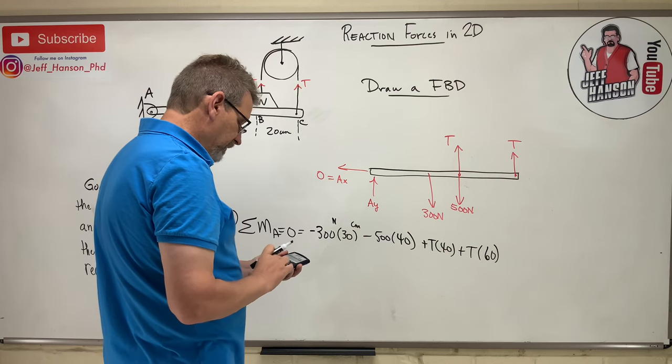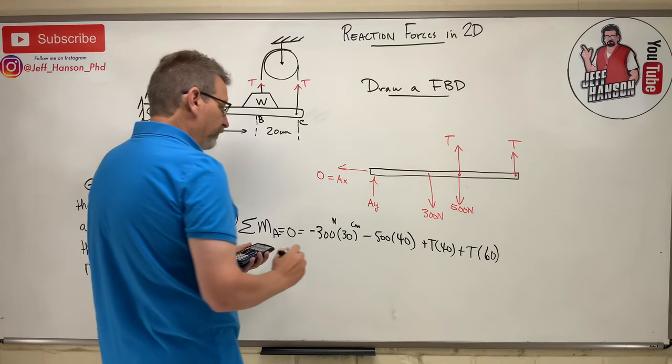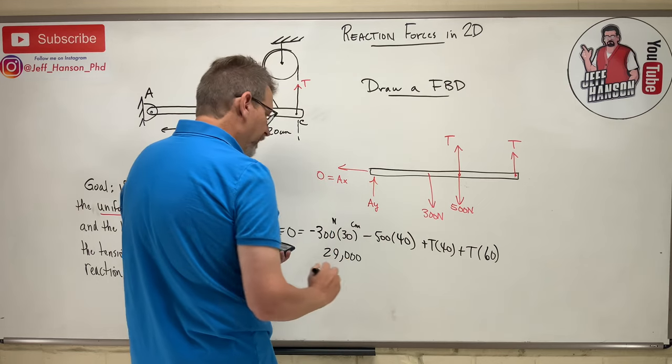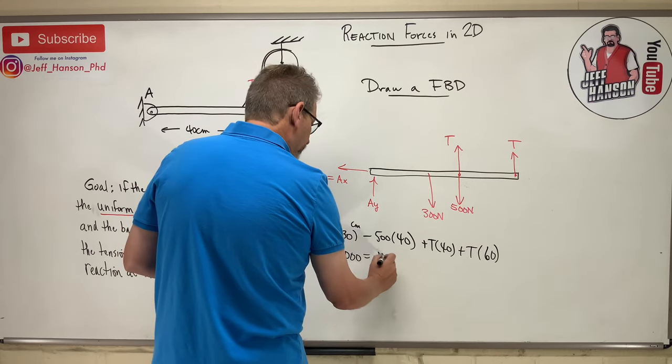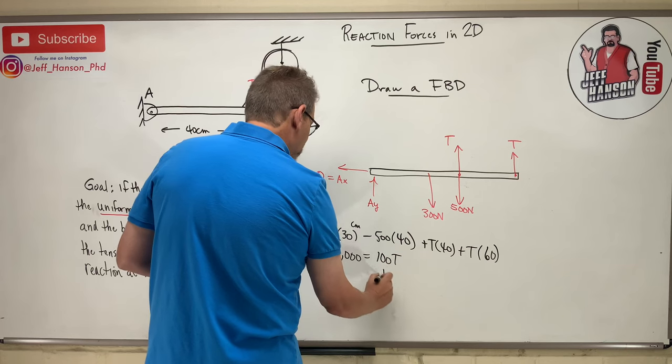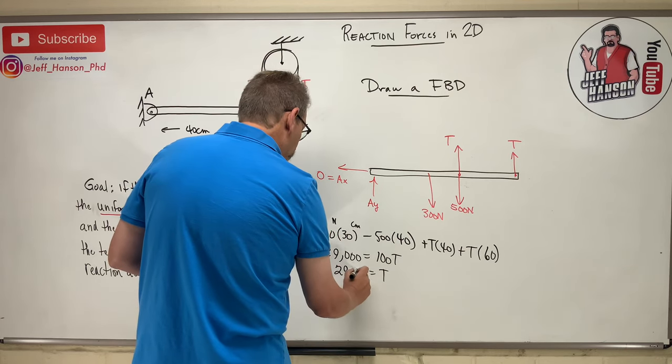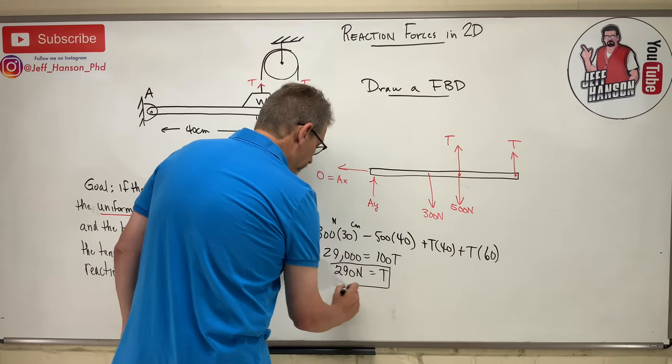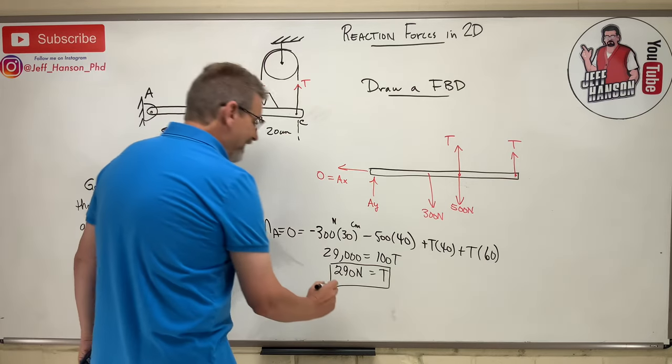Oh, we got this, don't we? Okay, so 300 times 30 plus 500 times 40 is 29,000. And 29,000 is equal to 40 and 60, 100T. So T is equal to 290 Newtons. So the tension in the rope, that's what we just found, is 290 Newtons.